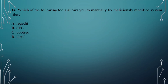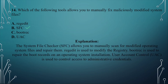Question number fourteen: Which of the following tools allows you to manually fix maliciously modified system files? A. RegEdit. B. SFC. C. BootRec. D. UAC. The answer is B, SFC. SFC stands for System File Checker and allows you to manually scan for modified operating system files and repair them. RegEdit is used to modify the registry. BootRec is used to repair boot records on an OS installation. User Account Control (UAC) is used to control access to administrative credentials.